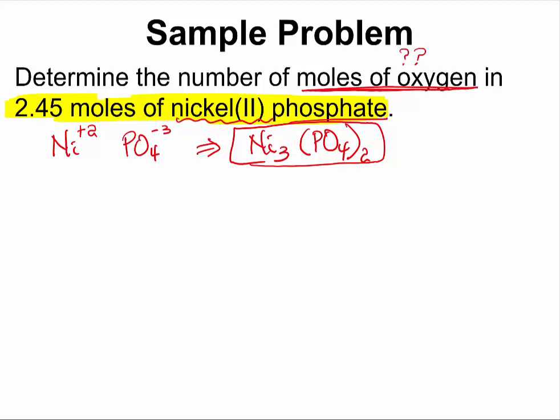And in that formula, we have 8 oxygen atoms. This means that one formula unit of nickel(II) phosphate has 8 oxygen atoms in it. If we scale it up,